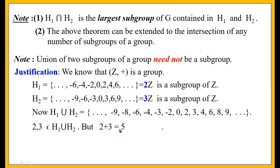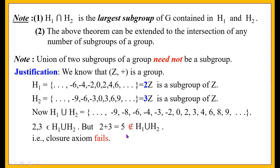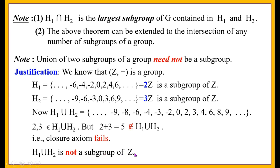The operation is addition, so 2 + 3 = 5. Does 5 belong to H1 ∪ H2? No — after 4 comes 6, so 5 is missing from the set. Therefore 5 does not belong to H1 ∪ H2. The closure axiom fails: we chose two elements 2 and 3 from H1 ∪ H2, but their sum 5 does not belong to H1 ∪ H2. Hence H1 ∪ H2 is not a subgroup of Z. Thus the union of two subgroups need not be a subgroup.